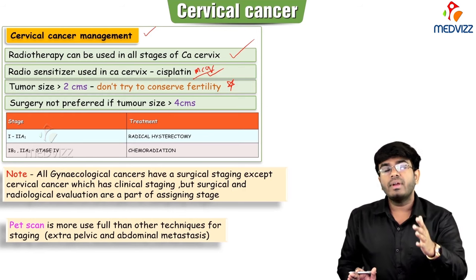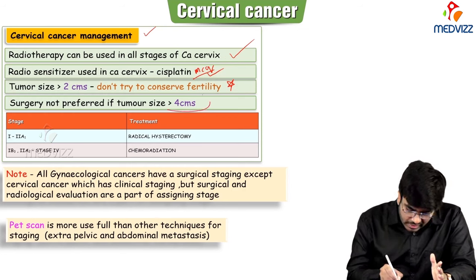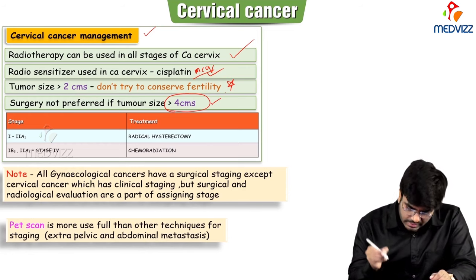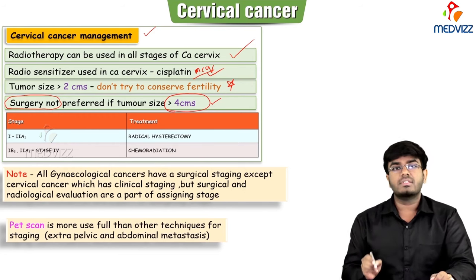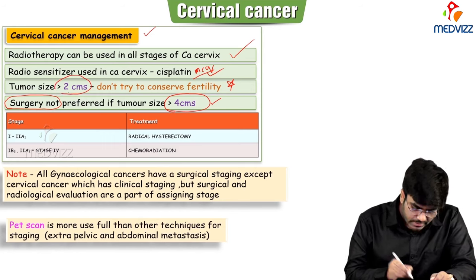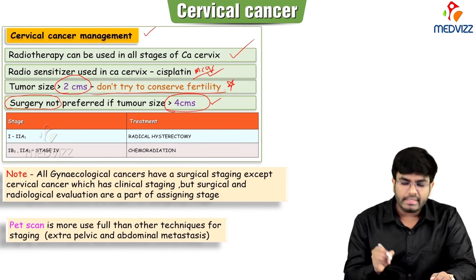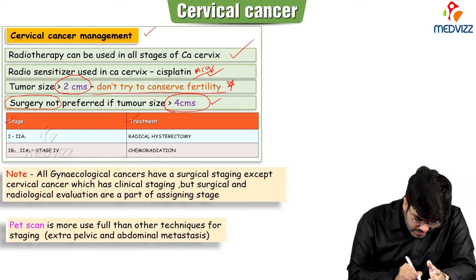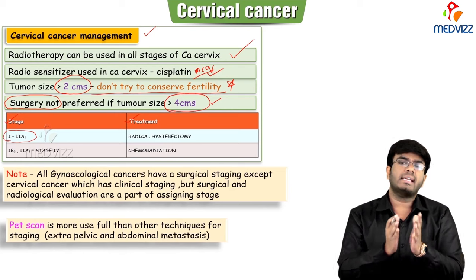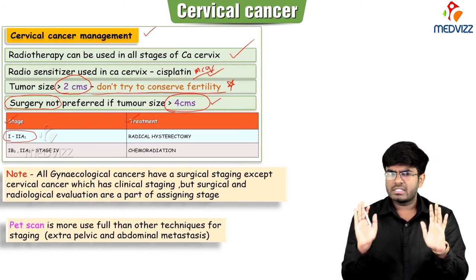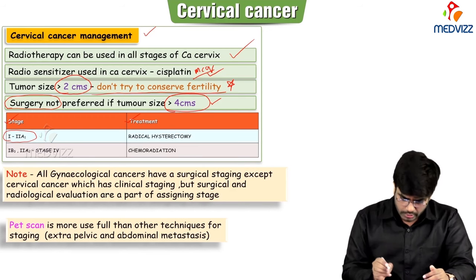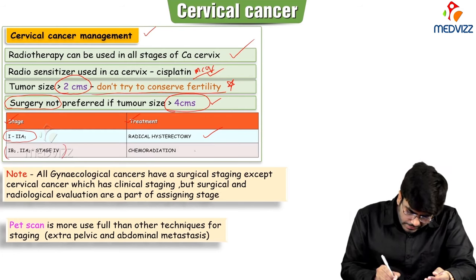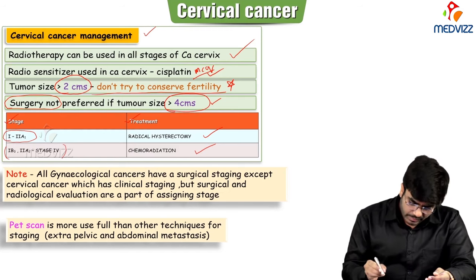If the cancer size is greater than 4 centimeters, do not consider surgery as an option. If size is greater than 2 centimeters, do not try to conserve fertility. As a general rule: if stage is between 1 and 2a1, you can do radical hysterectomy. If stage is between 1b3 and stage 4, do chemo-radiation.